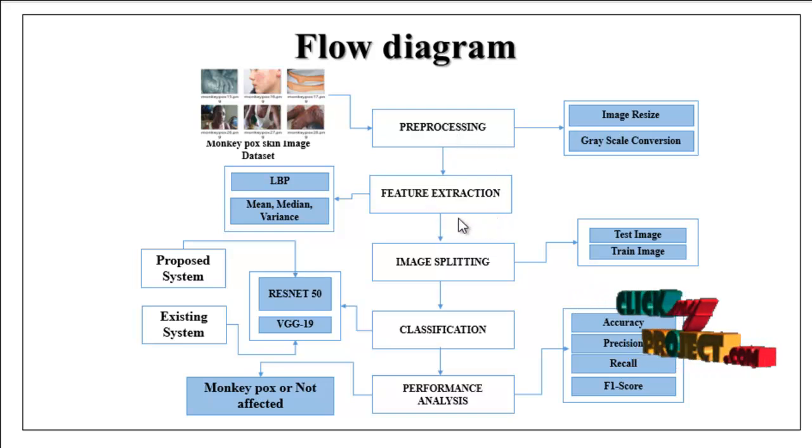The extracted features is carried out to image splitting models. Here, we can split the whole image into test and train. Test is used for prediction and train image is used for evaluation or training the model. With the help of the trained data, we can train the model. And with the help of the test data, we can analyze our final result.